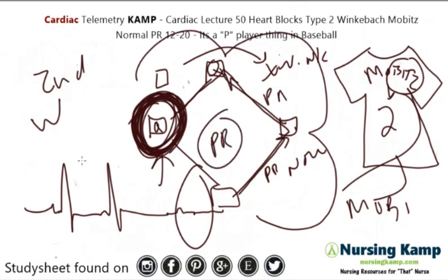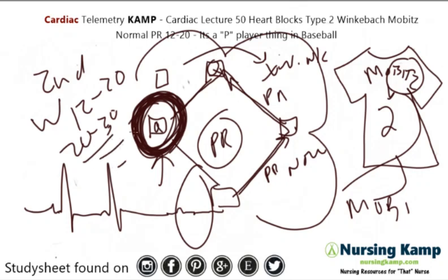There's a dropped QRS without a prolonged PR — that's the big thing with Mobitz II. His PR interval will be anywhere from 12 to 20, whereas Wenckebach will have anywhere from 20 to 30 plus, getting longer and longer. So that's Mobitz II. We covered three of them: Slowpoke the first baseman, Wenckebach the second baseman who takes a long journey and misses a QRS, and Mobitz who runs at normal speed to every base but still skips a QRS with no prolonged PR.